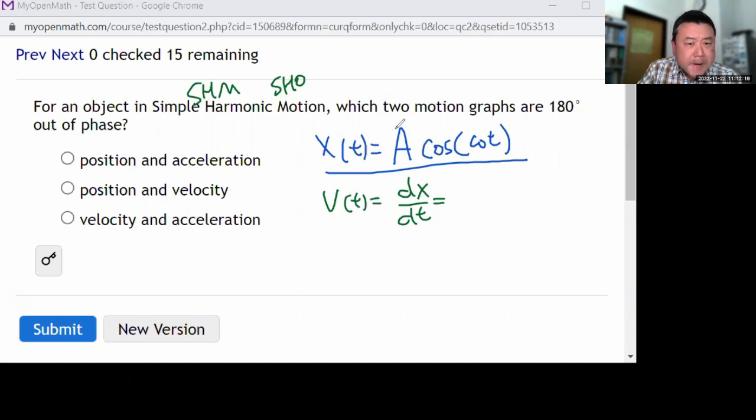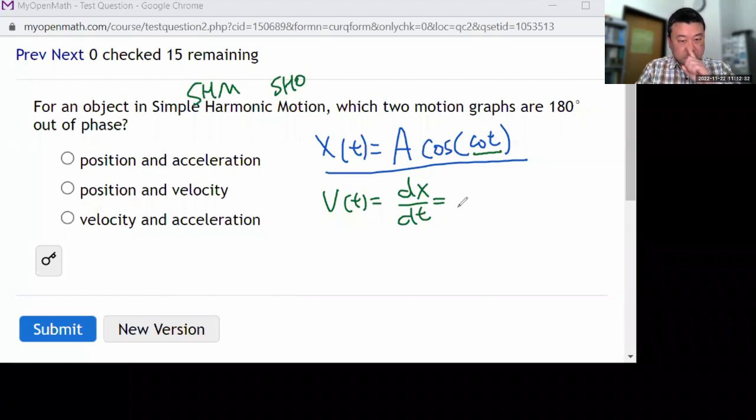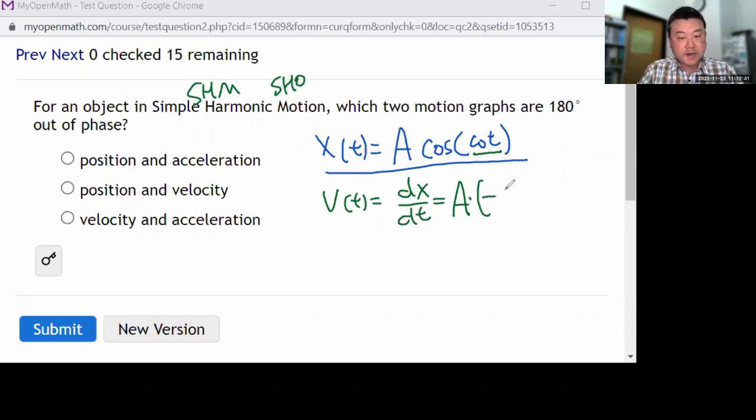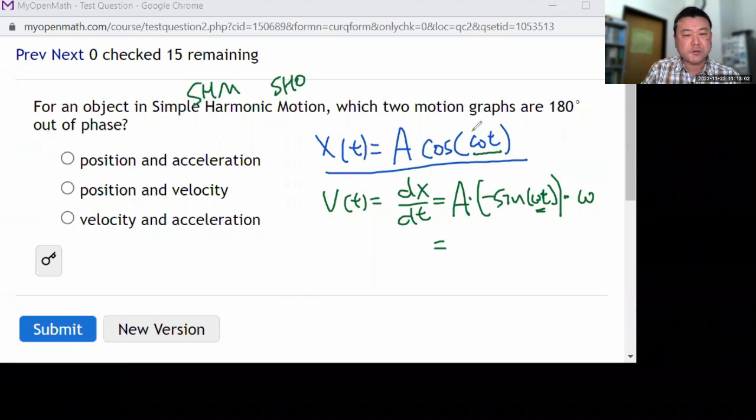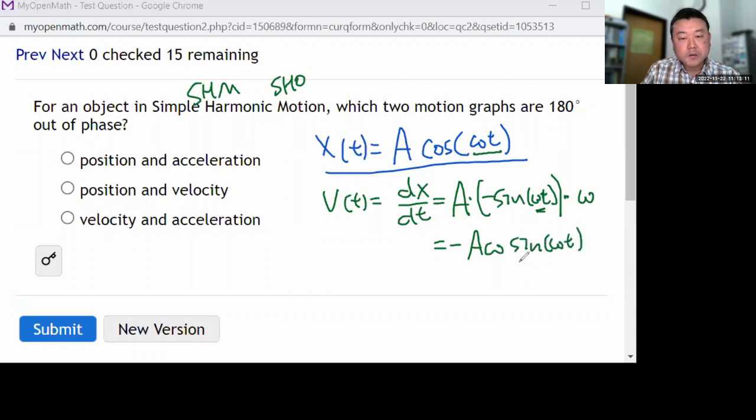Then I can write down what velocity and acceleration graphs should look like. Velocity as a function of time is given by derivative of position. We are bringing back all the stuff from kinematics that we introduced. And this time it's going to be interesting because acceleration is not constant. So taking time derivative, A is constant, derivative of cosine is minus sine, and I use chain rule to take the derivative of the inside. I get an omega, so it should be minus A omega sine omega t.